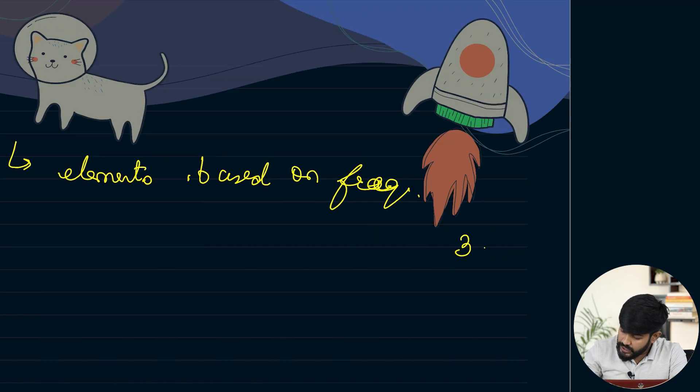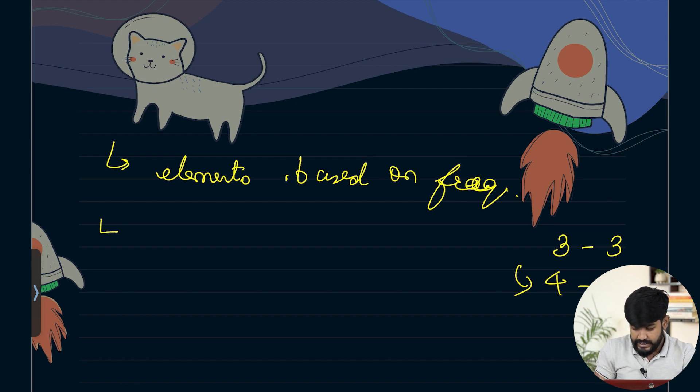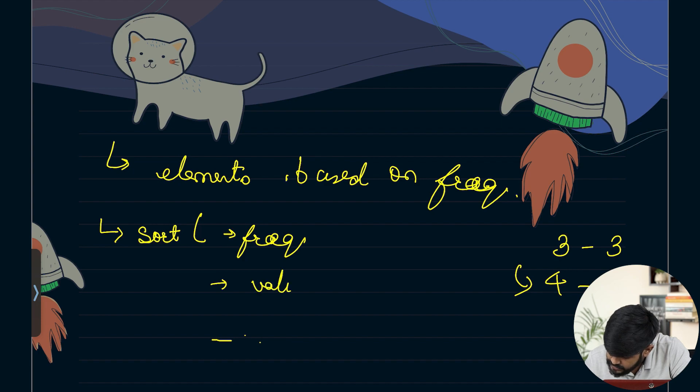If let's say 3 has a frequency 3 and 4 also has a frequency 3, then 4 needs to be preferred over 3. So we can understand that we need to sort the values based on frequency. This is the very first reason. And the very next thing is based on the value it holds.